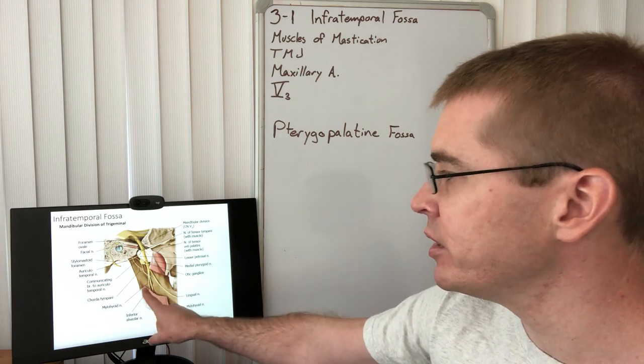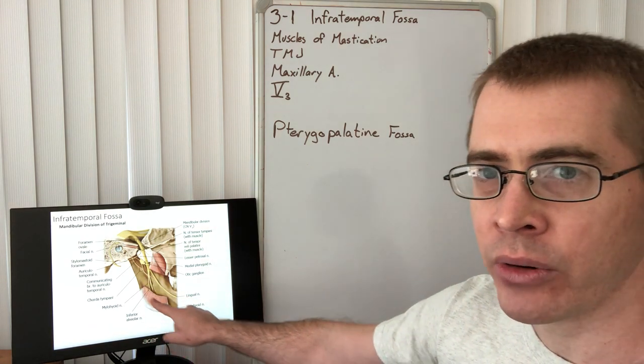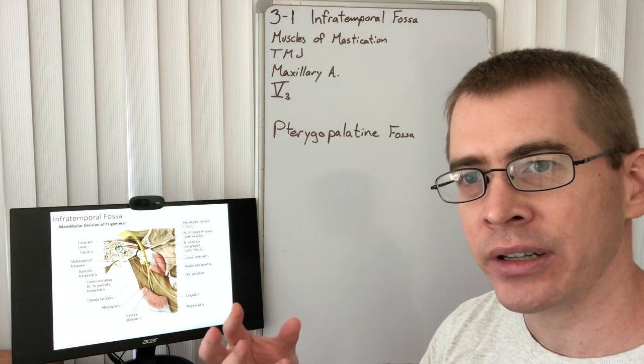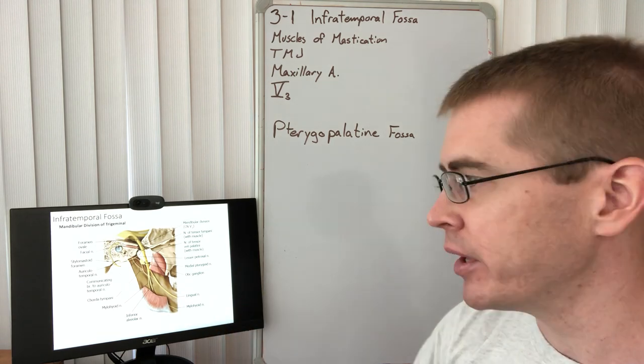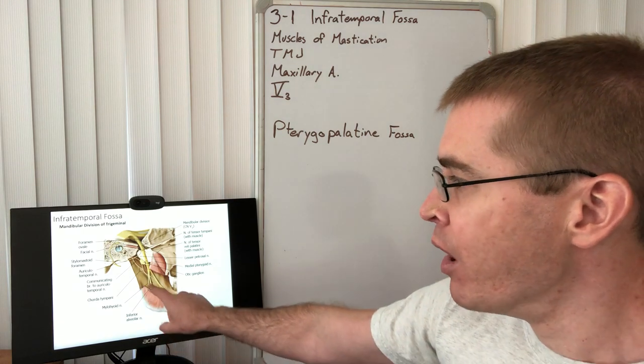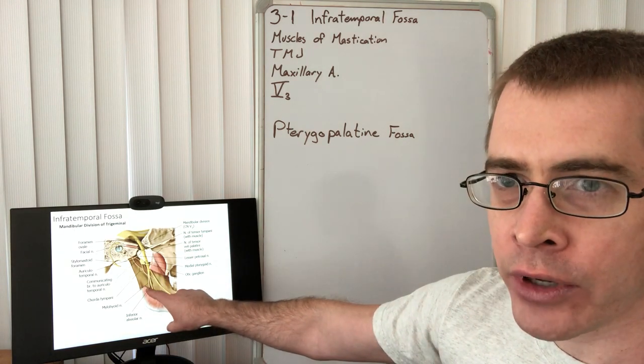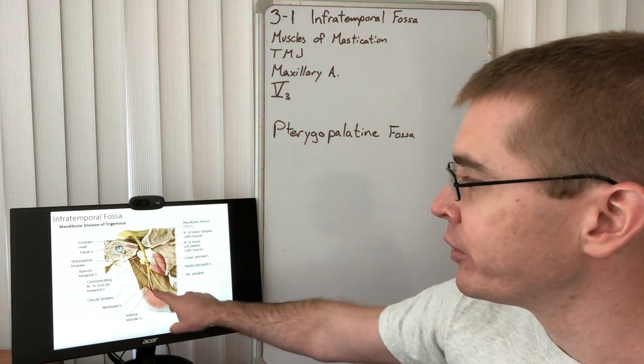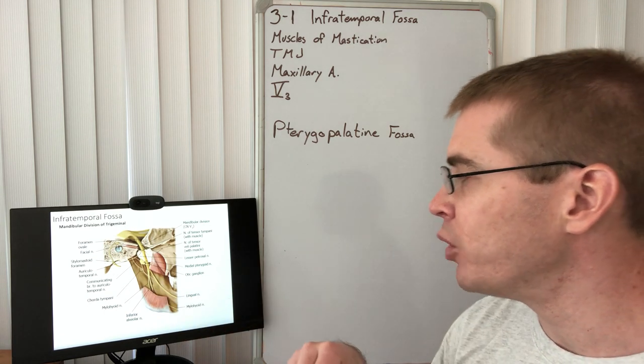And an important nerve here is the nerve to mylohyoid. Remember mylohyoid is innervated by V3 and here we see that is obviously apparent. Mylohyoid nerve will branch from the inferior alveolar nerve just before inferior alveolar enters the mandible.